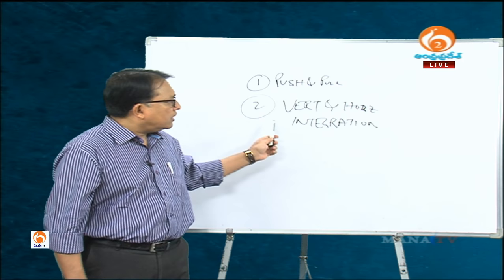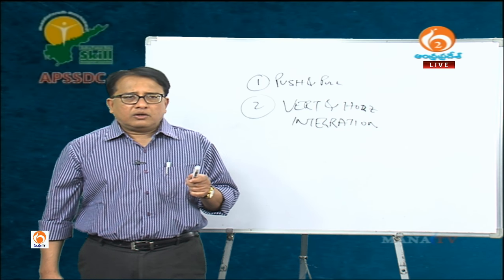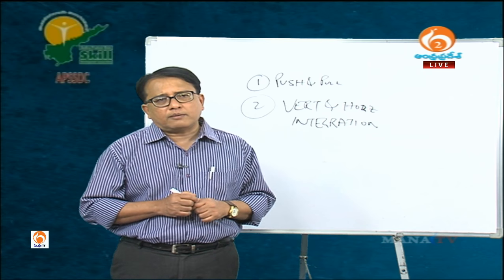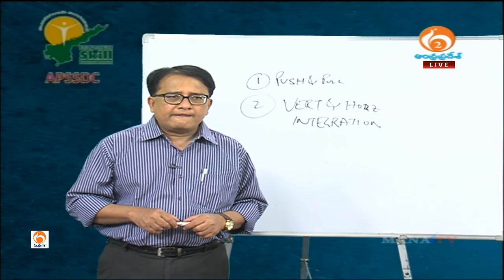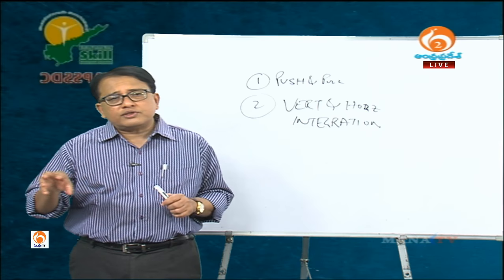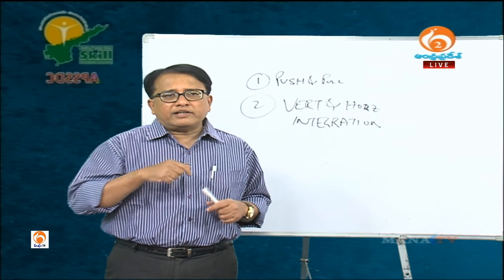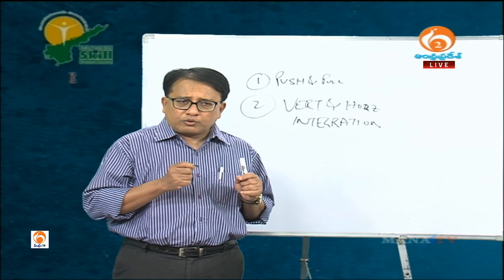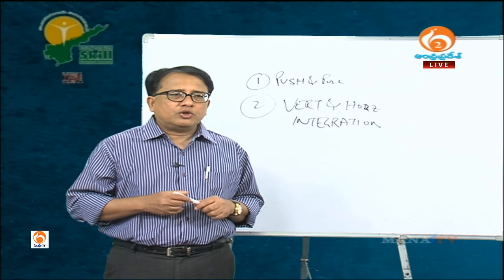Coming back to today's session — we also discussed vertical and horizontal integration. In supply chain, we talk of integrating different entities, different companies, organizations, and facilities together. Integrating all of them is the key to the success of the supply chain of a particular company. We are not only talking of internal integration within the company — there are different functional groups such as marketing, HR, engineering, manufacturing, production, and research and development.